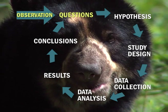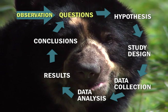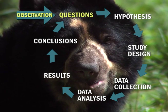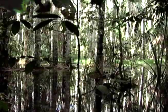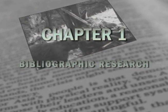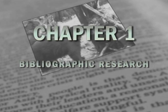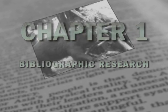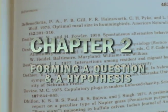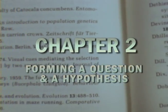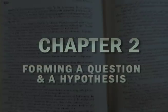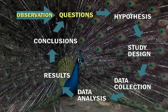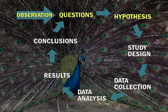The scientific process begins with making observations and asking questions about those observations. But good research always builds on the work of other scientists. In chapter one, you will learn how to conduct bibliographic research in the field of animal behavior in order to put those observations into context. Chapter two will guide you through the process of developing a research question based on your observations and what you have read. Then you will learn how to form a hypothesis that addresses your research question.